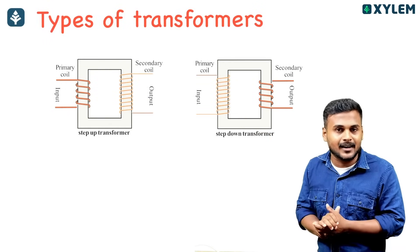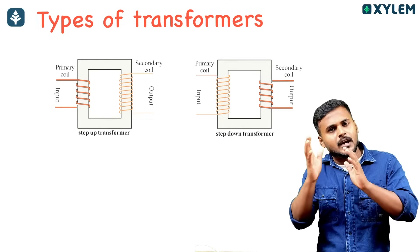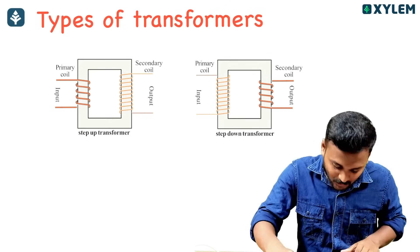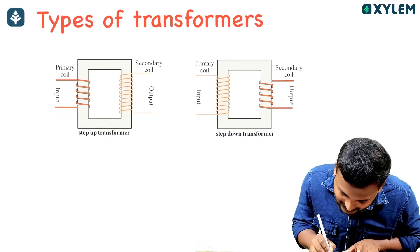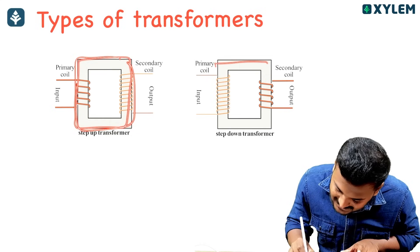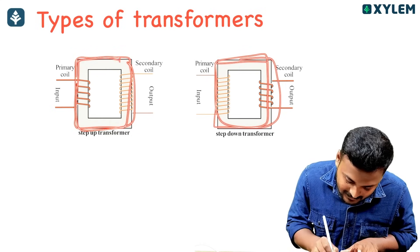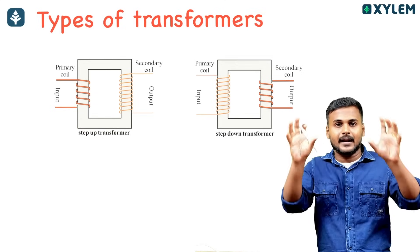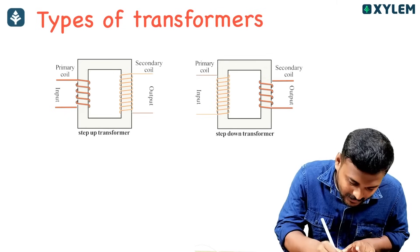If you have two different transformers — one is step-up and the other is step-down — how do we classify this? In a transformer, let's see what the transformer looks like.